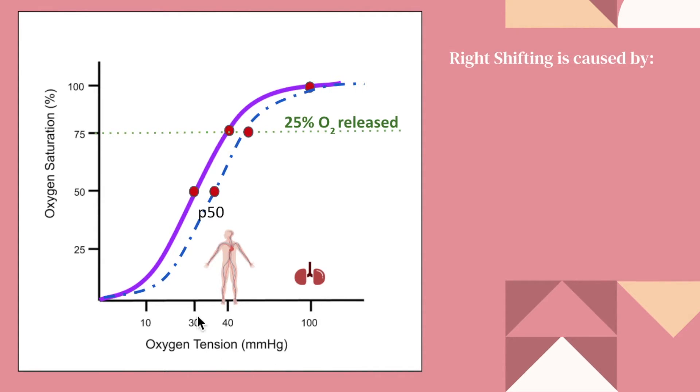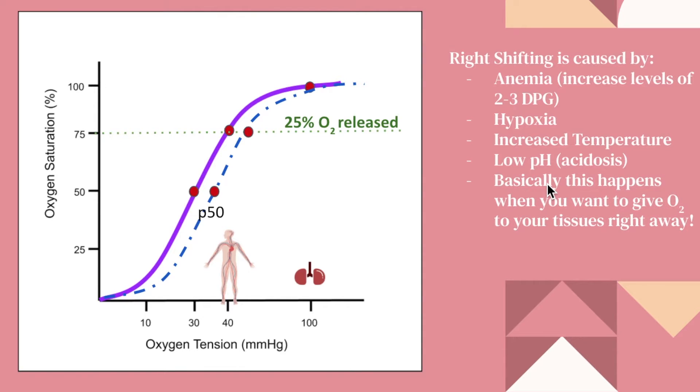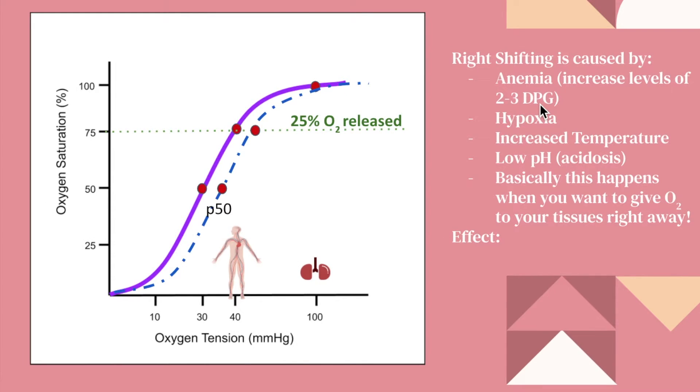But we're going to talk about the causes of why it's shifting. So there's anemia, hypoxia, increased temperature, low pH, or acidosis in the tissues. And basically, this happens when you want to give oxygen to your tissues right away. So it's like you want to get rid of oxygen right away. So this goes back to the previous slide that talks about 2,3-DPG. And that's with the presence of 2,3-DPG, beta chains shifts the heme molecule into the tense form and releases oxygen.